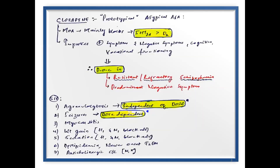Before going into Clozapine, which is the prototype atypical antipsychotic, let us brush up the atypical antipsychotic agents once again. Clozapine is the prototypic atypical antipsychotic. Other examples include Olanzapine, Quetiapine, Loxapine, Asenapine, Risperidone, Paliperidone, Ziprasidone, Iloperidone, Aripiprazole, Cariprazine, and Pimavanserin. Let me now concentrate on the prototype atypical antipsychotic agent, Clozapine.